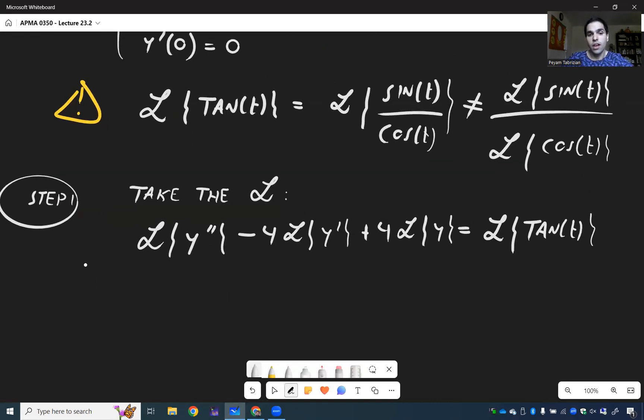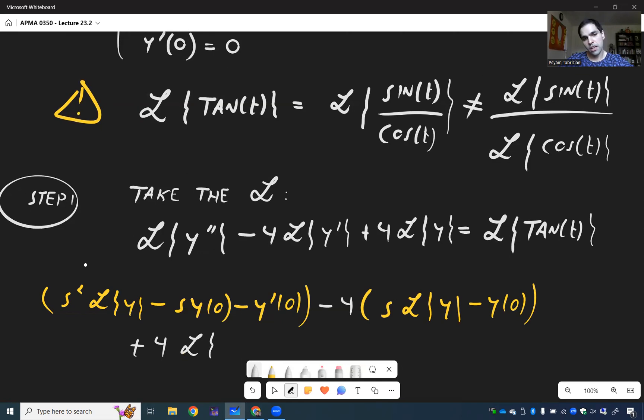And then we can use our miracles. So S squared L of y minus S y of 0 minus y prime of 0, and then minus 4, S L of y minus y of 0, and then plus 4 L of y. So Laplace of tangent of y is Laplace of tangent of t.